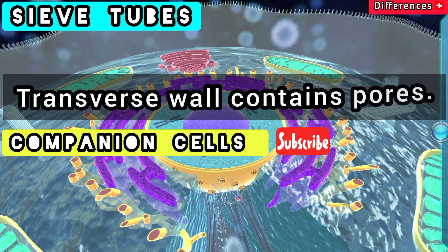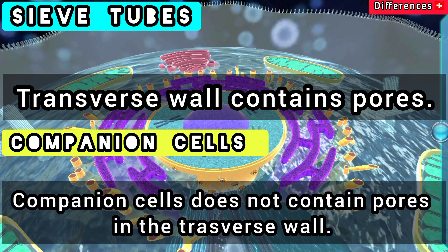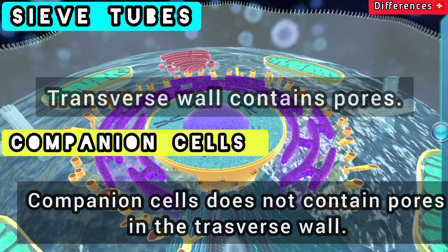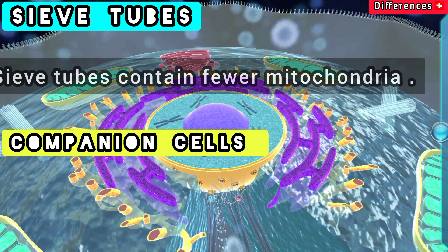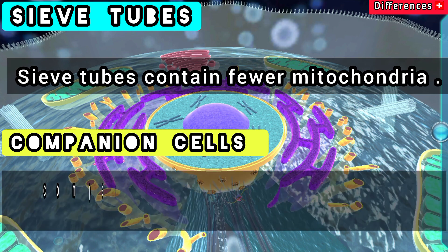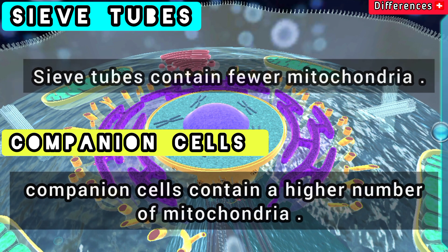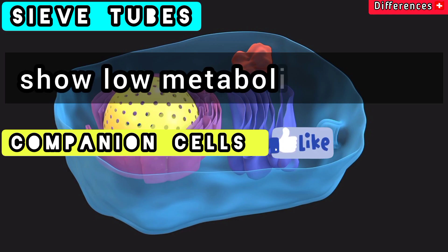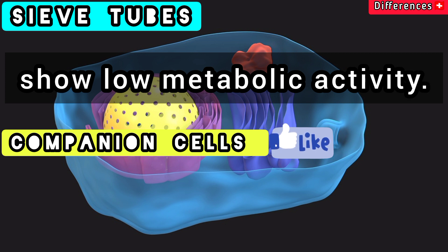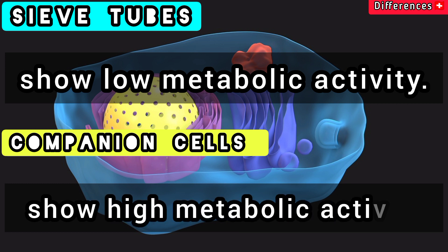In sieve tubes, the transverse wall contains pores, while companion cells do not contain pores in the transverse wall. Sieve tubes contain fewer mitochondria, while companion cells contain a higher number of mitochondria. Sieve tubes show low metabolic activity, whereas companion cells show high metabolic activity.